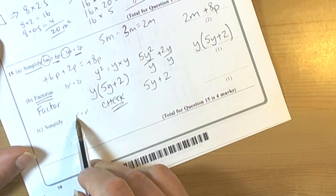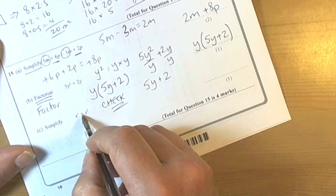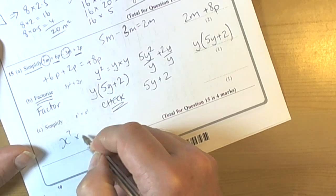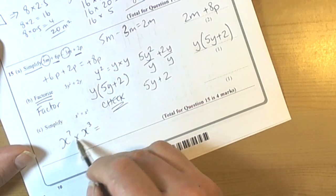The last part says simplify. We've got an expression where we're multiplying 2 powers of X. So we have X to the power of 7 times X to the power of 3. Now the rule of indices when we're multiplying the same bases,